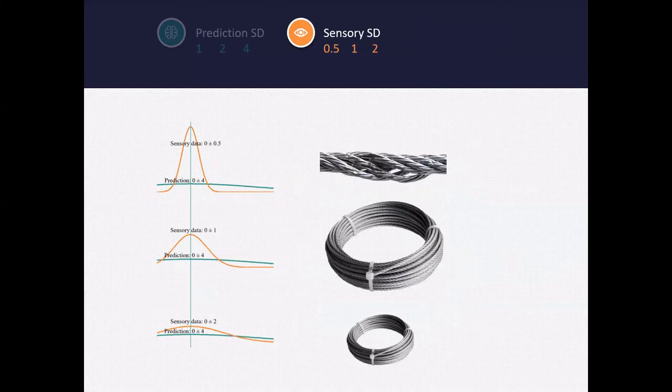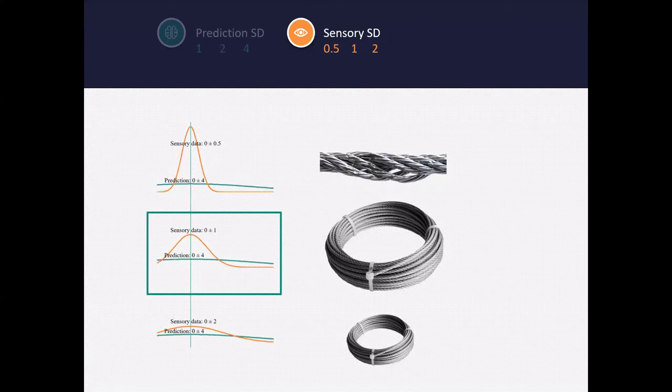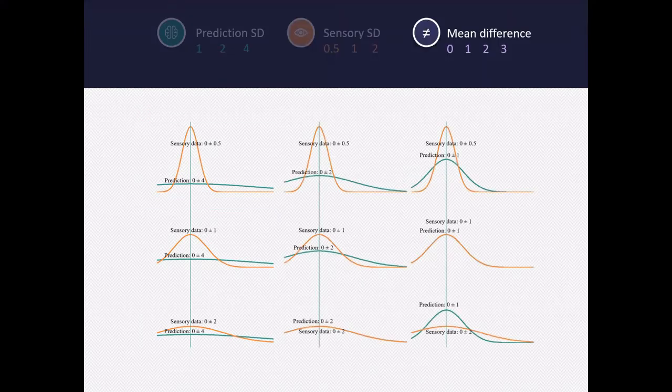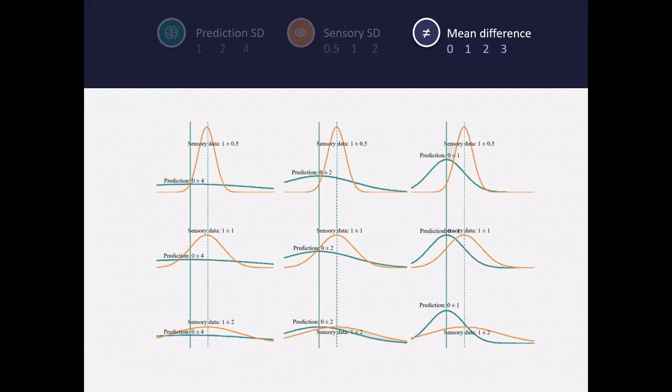Same for sensory data. The actual standard deviation is 1, so if you perceive it as 2, then you overestimate the uncertainty in your data. If it is 0.5, you underestimate the uncertainty in your data. We also generated trials where there was an average difference between the prediction and the sensory data.